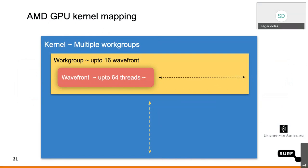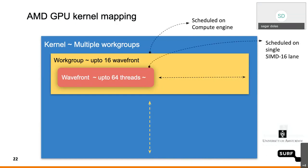For a particular kernel, you might have multiple workgroups. Each workgroup can have a maximum of 16 wavefronts, and each wavefront can have a maximum of 64 threads. This workgroup, comprising 16 wavefronts, is scheduled on a single compute engine. A wavefront, with a maximum of 64 threads, is scheduled on a single SIMD-16 lane. A single wavefront would therefore take four cycles to execute on a single SIMD-16 lane. At one time, it can support up to 16 wavefronts in a single compute unit.